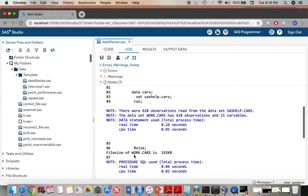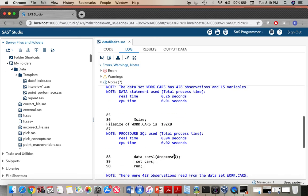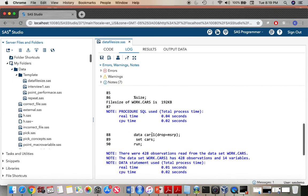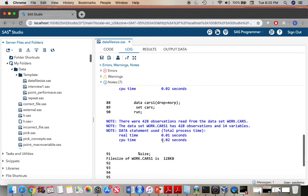Once I run everything I can look into the log and see what is happening. The log shows file size of dataset after the dataset is created. In the first case the dataset created is work.cars and it says that it is 192 KB, whereas in the second case the dataset created is cars1 and its size is 128 KB.